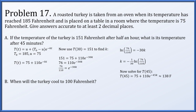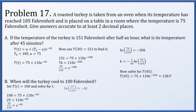Part b: when will the turkey cool to 100 degrees Fahrenheit? We set the temperature to 100, so 100 equals 75 plus 110 times e to the minus kt. Subtracting 75 and dividing by 110, taking a log and dividing by negative k, we get t equals 30 times the natural log of 25 over 110 divided by the natural log of 76 over 110, which is roughly 120 minutes.